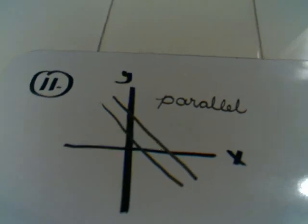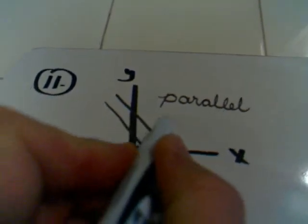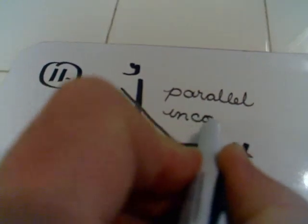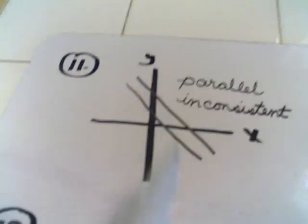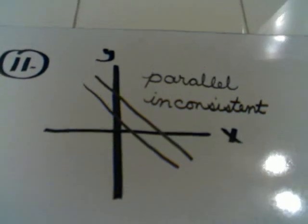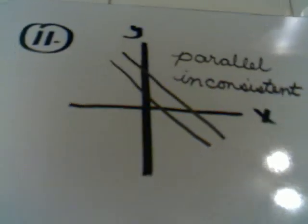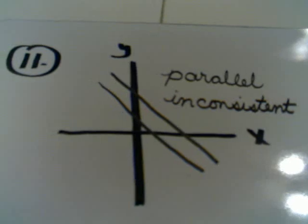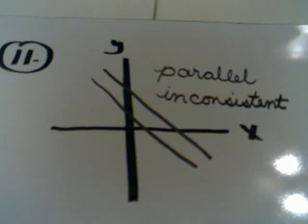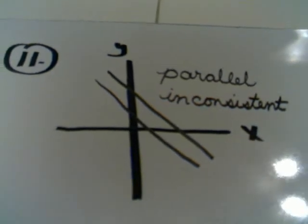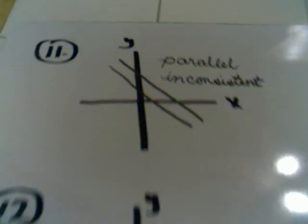This is also sometimes referred to as inconsistent. This is an inconsistent system. And the reason it's called inconsistent, remember the definition of consistent. Consistent means that you have at least one point of intersection. Well, inconsistent means you have no points of intersection.